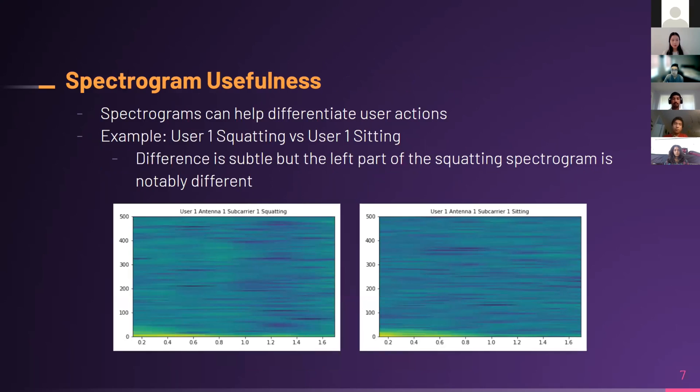The first application of these spectrograms is differentiating between user actions. As seen in the two images below, you can see the difference between user one squatting versus user one sitting. The difference is subtle, but you can see that the left part of the squatting spectrogram is notably different as there are more high-range frequencies in the beginning of the squatting spectrogram than the sitting spectrogram.